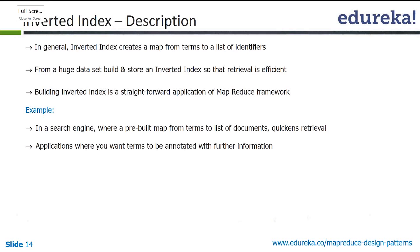Examples where inverted indexes are used: of course, the search engine, which everybody knows about. The inverted index helps in quicker retrieval of whatever search terms you have searched on. Another application is where you want terms to be annotated with further information — for example, in text analytics, where we do a lot of annotations.